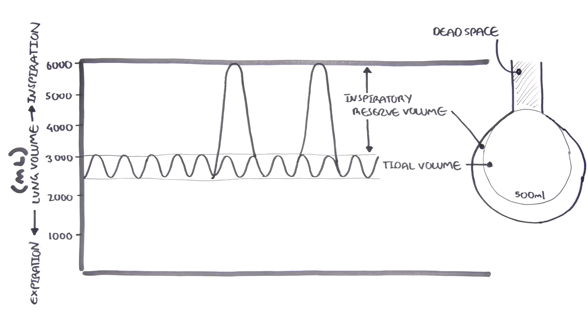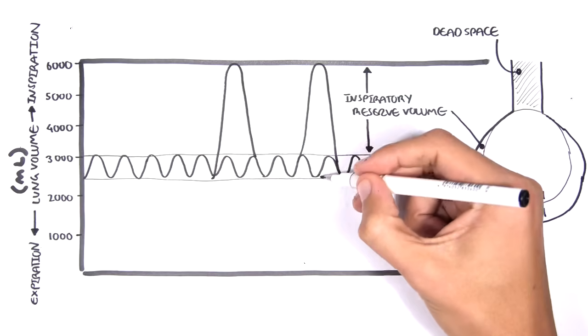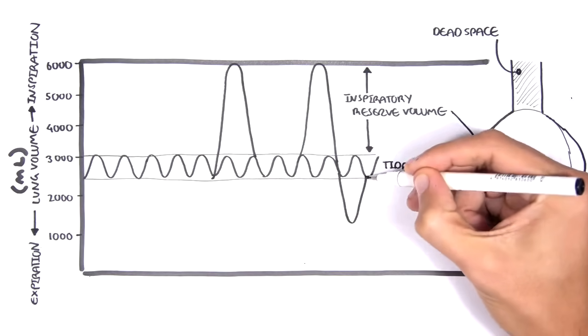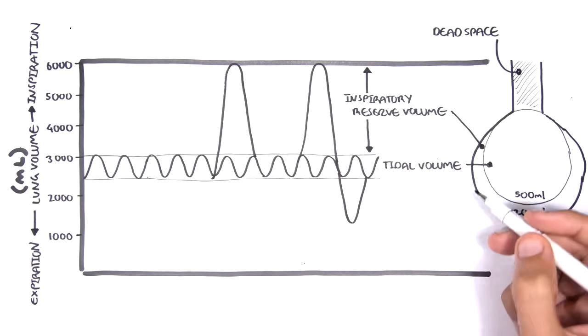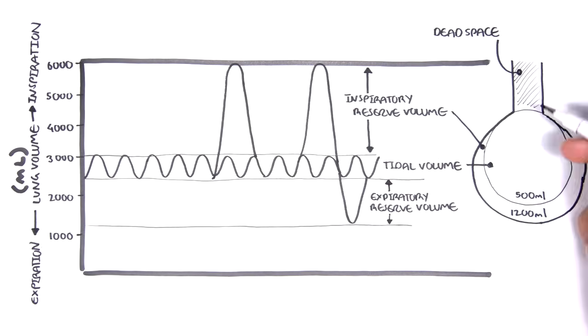Don't worry, here I drew 1,200, but it's meant to be 3 liters. It will correct itself soon. Then let's say we breathe normally, so normal tidal volume, and then we have a maximal expiratory phase. This is the expiratory reserve volume, typically 1.5 liters.